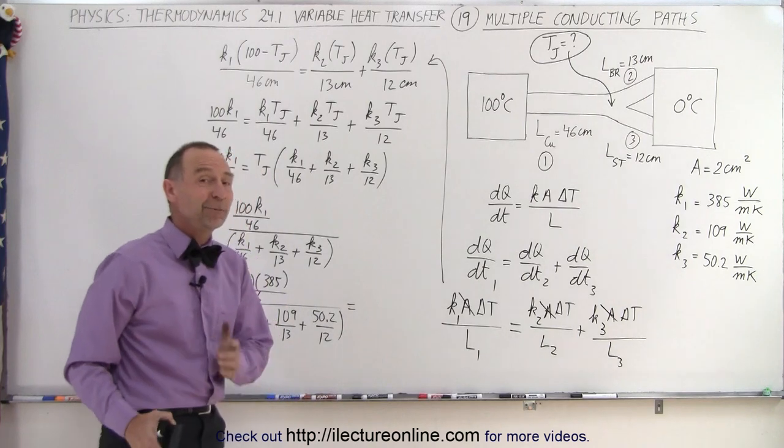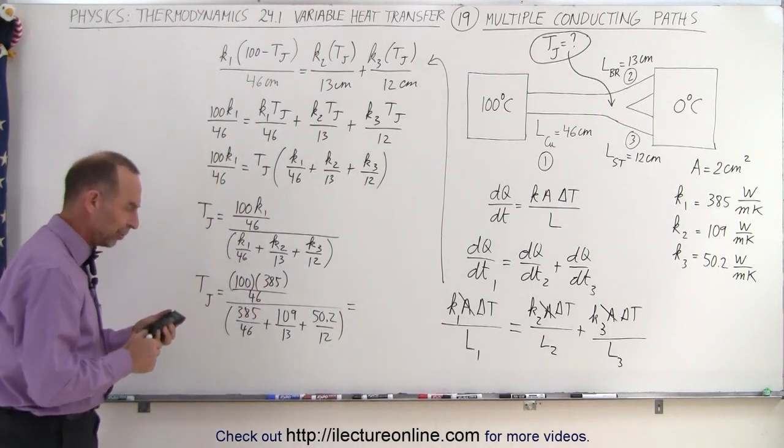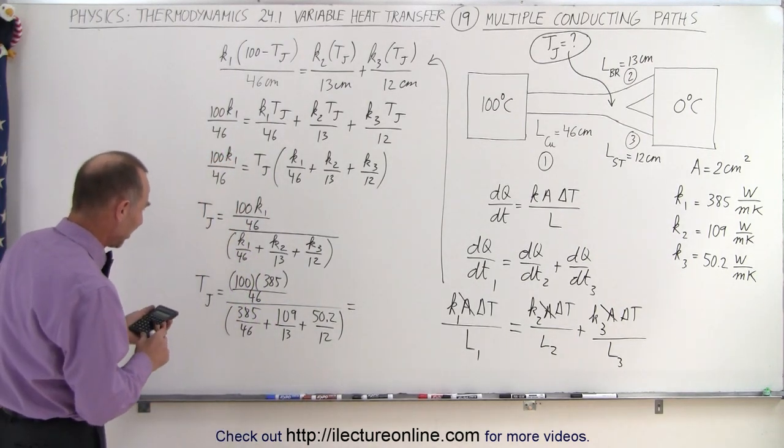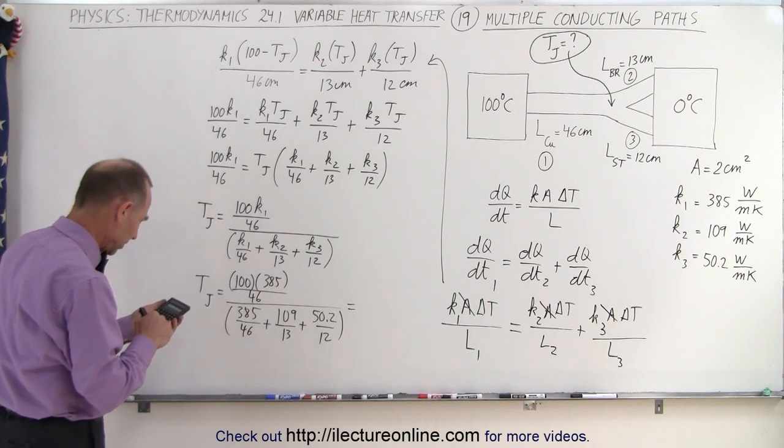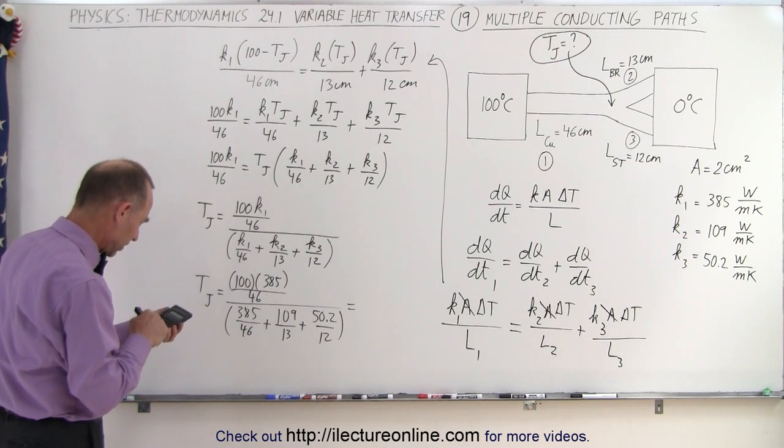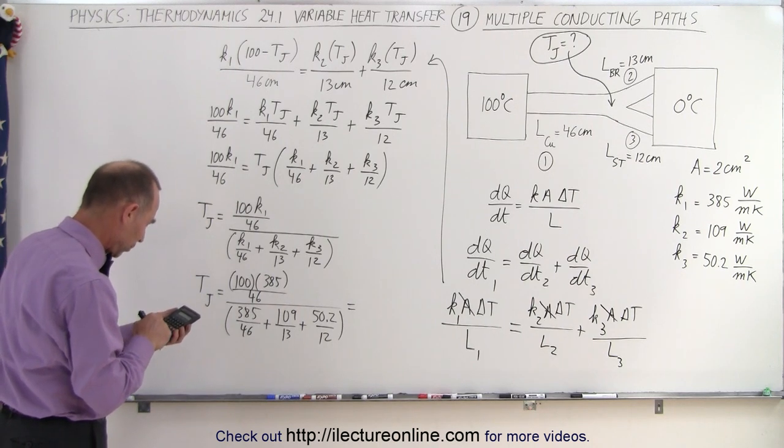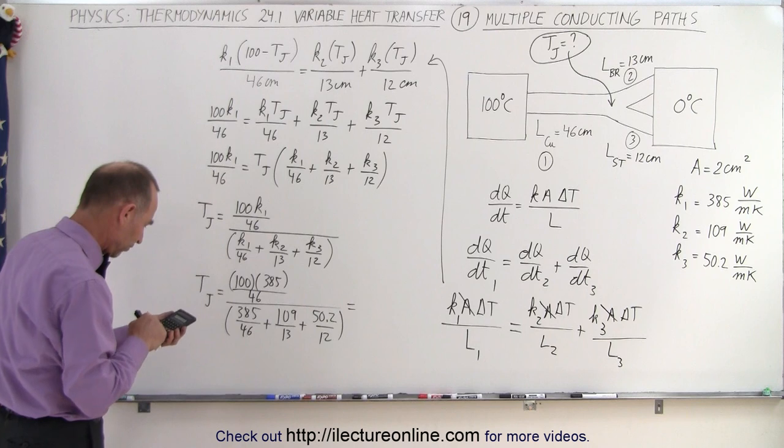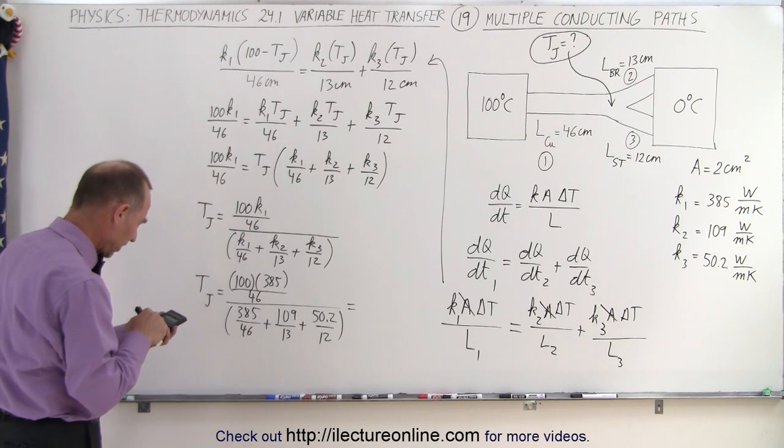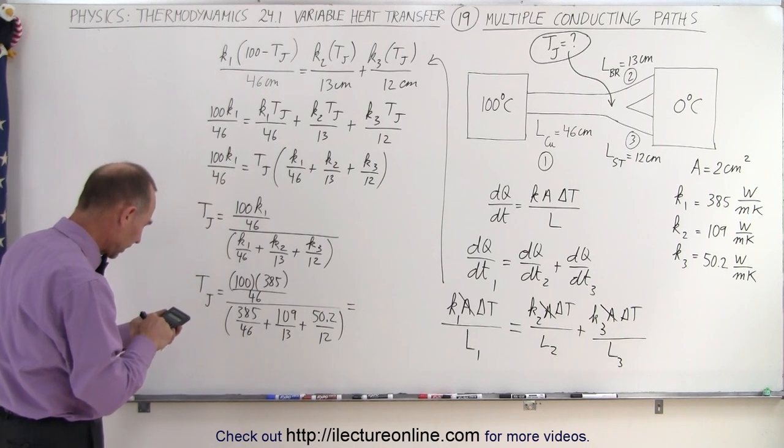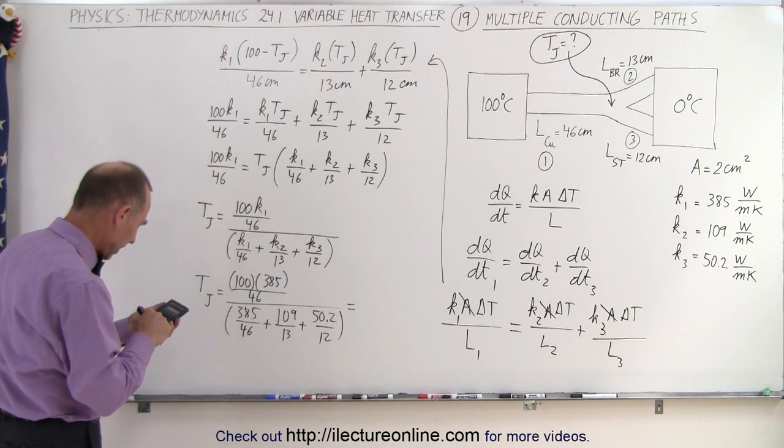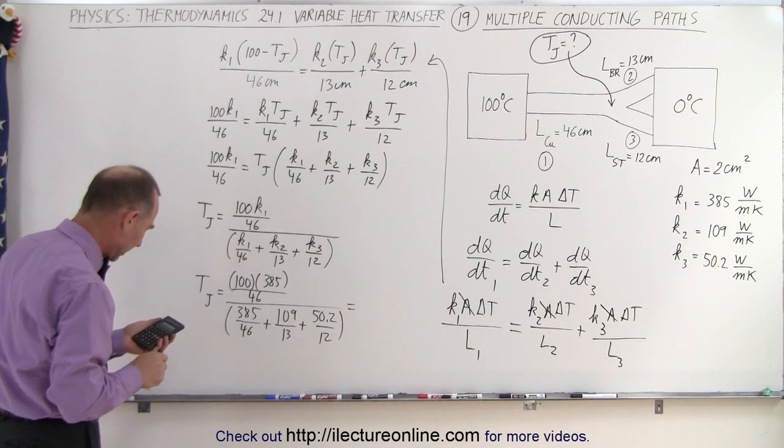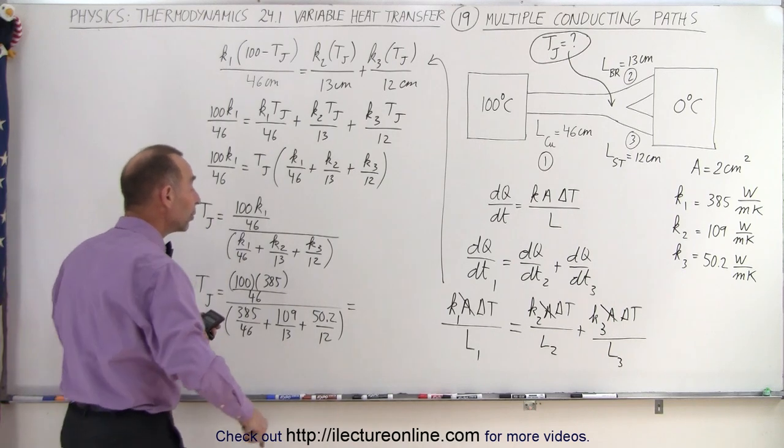Hopefully we get something between 100 and 0, or we made mistakes. First, let's work the denominator: 385 divided by 46 plus 109 divided by 13 plus 50.2 divided by 12. We take the inverse of that, multiply times 100, times 385, and divide by 46. I get a temperature of 40 degrees Celsius.